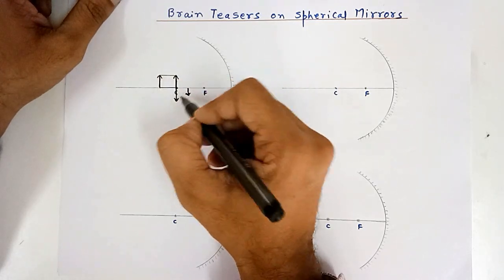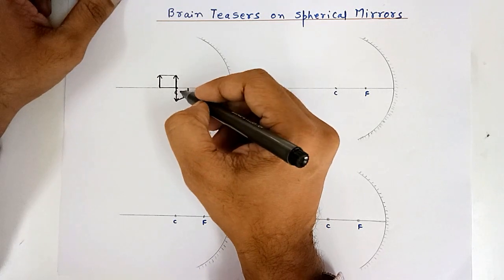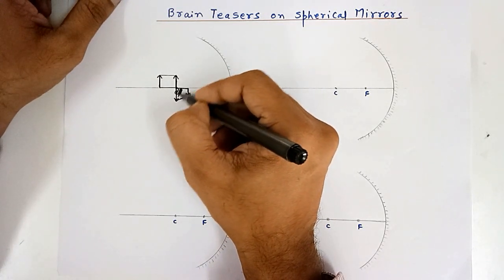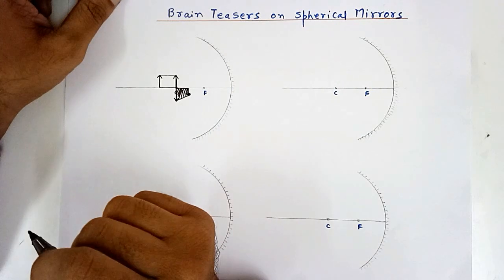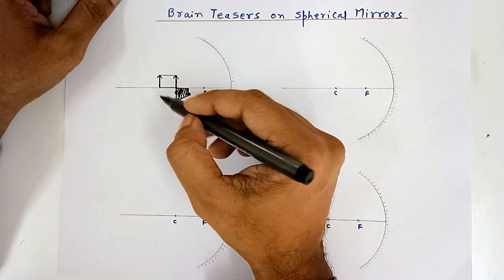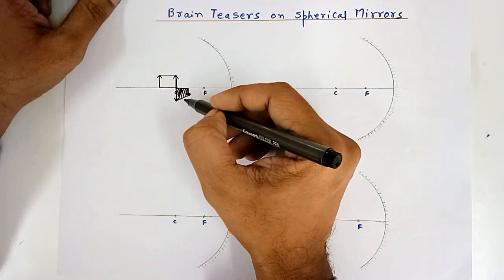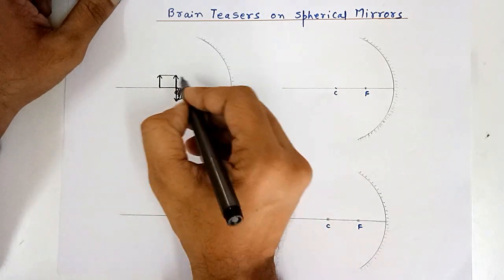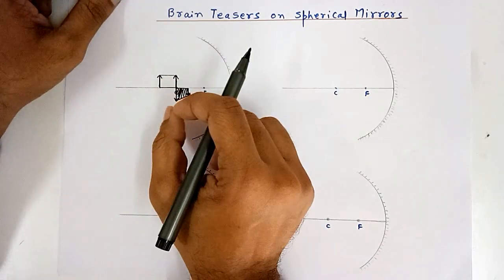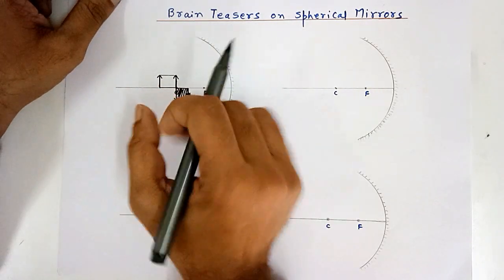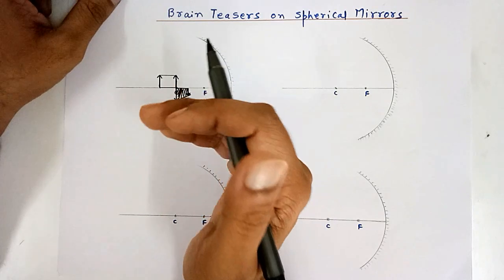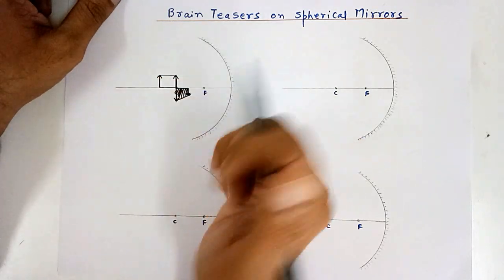Since we have joined these two parts, we join the image parts as well. So this is the image of the object. You can actually see that the area of the object has also changed. Along with linear magnification, area-wise magnification also takes place — sometimes the area decreases, sometimes the area of the object and the image differ.